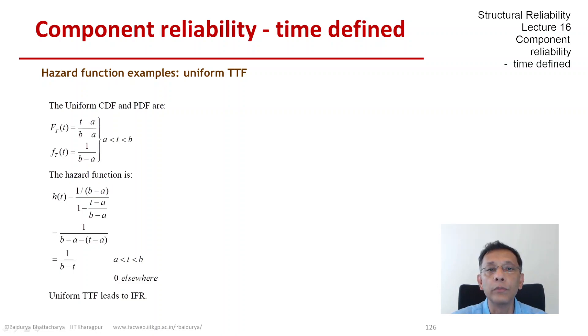And the constant failure rate basically says, whatever time you are at, the likelihood of failure the next instant doesn't change. So there is no aging effect going on; things don't become more likely to fail as time goes for an exponential TTF.